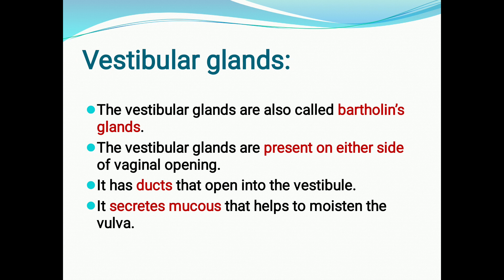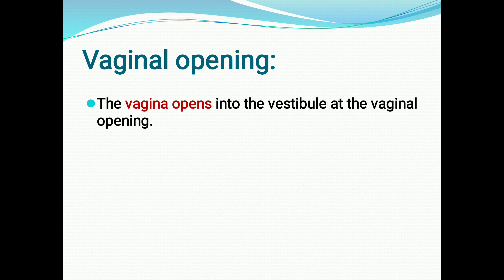Vestibular glands are glands present on either side of the vaginal opening, which open into the vestibule. They are also called Bartholin's glands. Their ducts open into the vestibule, and they secrete mucus — a thick sticky fluid — which helps in moistening the vulva.